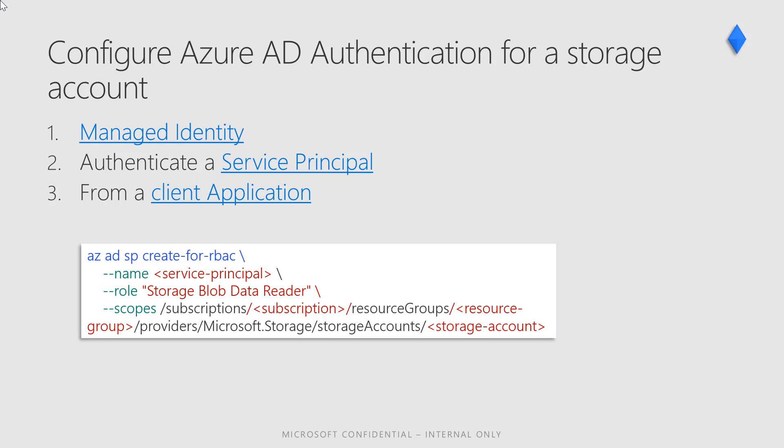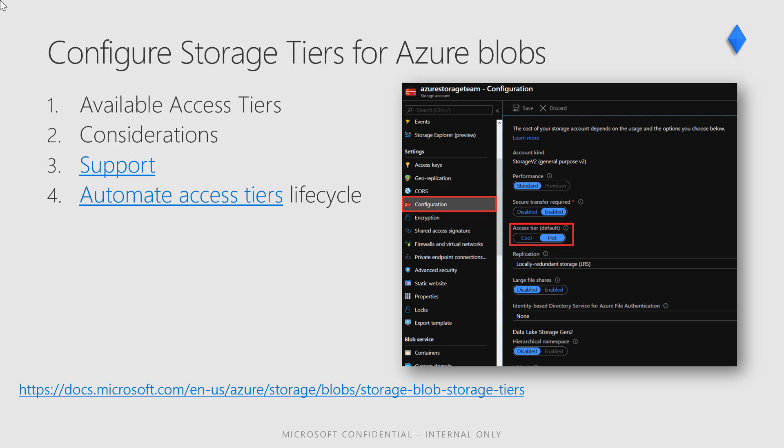Instead, you can request an OAuth 2 access token from the Microsoft Identity Platform. Azure AD authenticates the security principal running the application. If the authentication succeeds, Azure Active Directory returns the access token to the application, and the application can then use the access token to request access to the blob storage or storage queue.